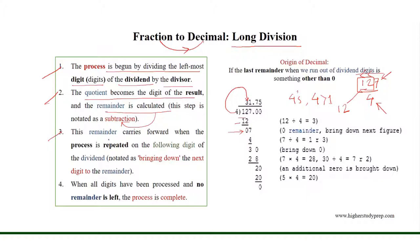This remainder carries forward when the process is repeated on the following digit of the dividend. So we can bring down the next digit, 7, to the remainder. Now, 4 will go one time into 7, because 4 times 1 is equal to 4, and 7 minus 4 equals 3, which is the last remainder and something other than 0.